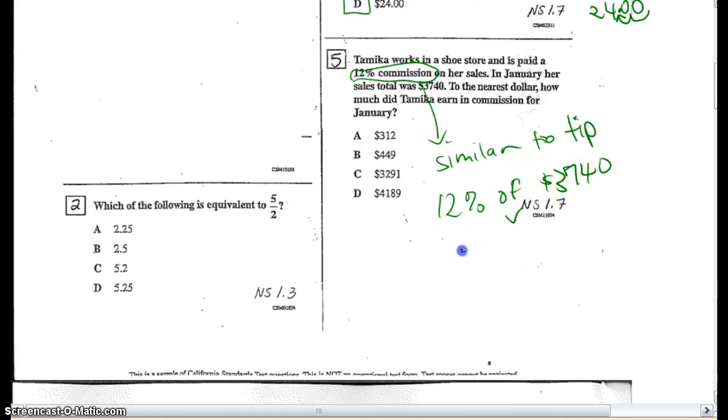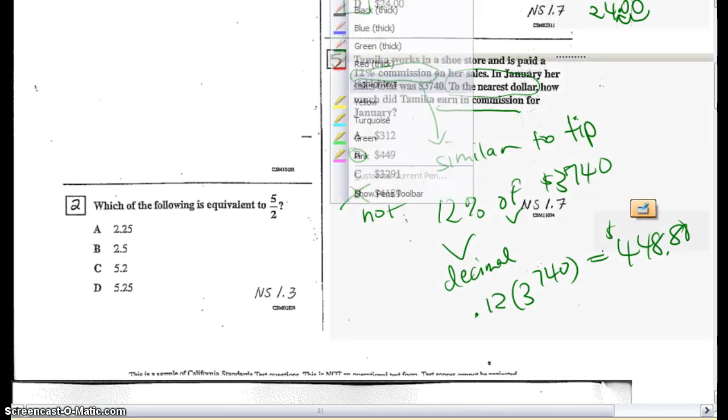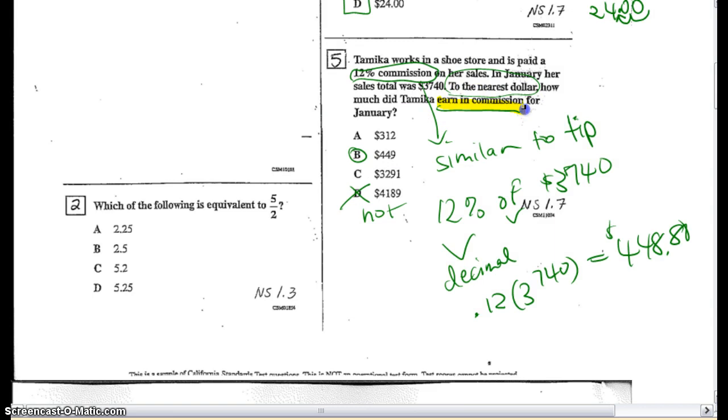So of is your key word to multiply. So I'm going to take the 12% and change it to a decimal, 0.12. And we're going to multiply that with $3,740. That is going to give us $448.80 in our calculator. Now we're rounding to the nearest dollar. So we're just going to get B. Now the reason it's not D is because it's not her total. It is just what she earns in commission. So we have to really read the questions carefully when we do our test. Because sometimes they may ask for the total, but sometimes it's just the discount, like number one. And here is just the commission. So it's like that extra tip that she makes.